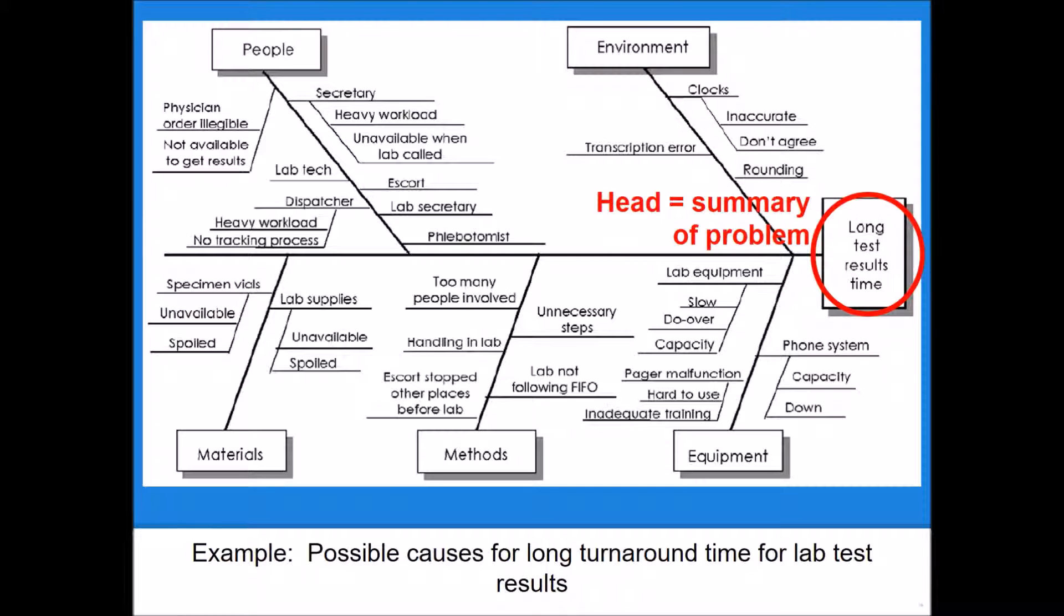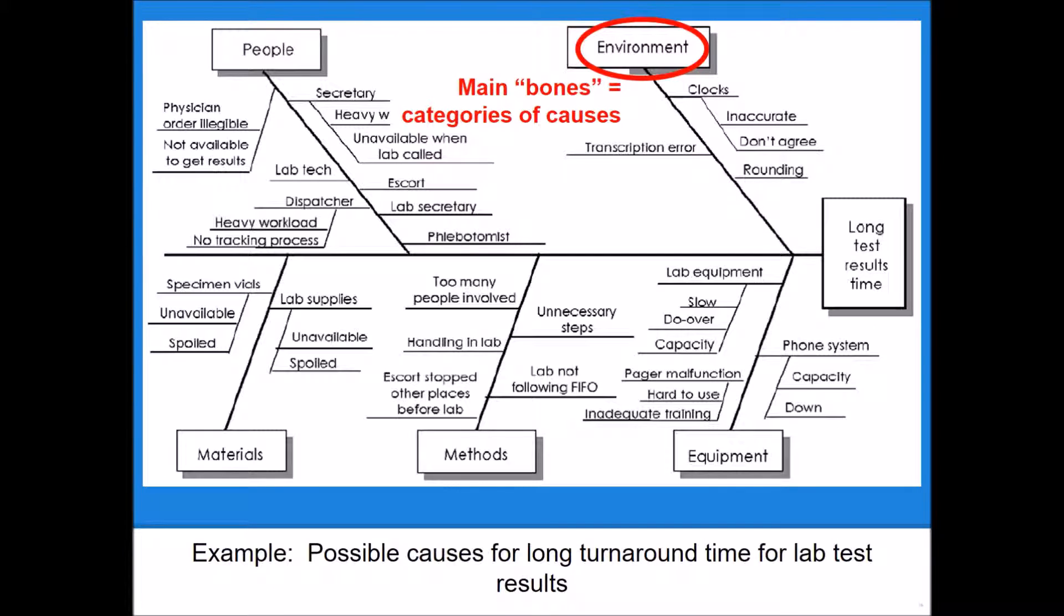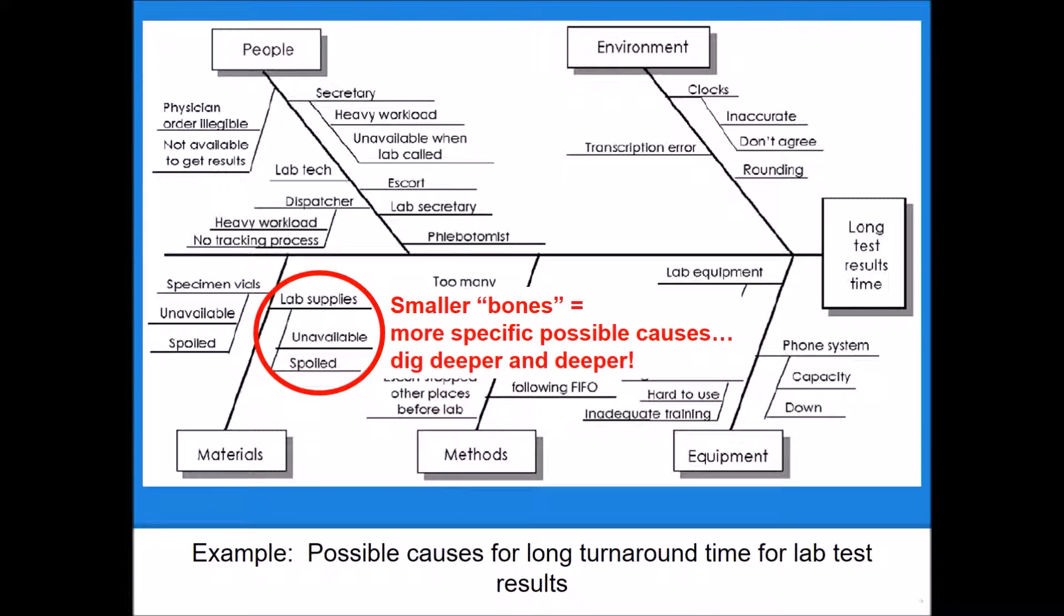The head of the fish is the summary of your problem. In this case, we're looking at a fishbone diagram for possible causes for long turnaround times for lab test results. The titles at the end of the main fish bones are the broad categories of potential causes for a problem. And then the smaller bones represent more specific causes. And as you get into smaller and smaller bones, you're digging down deeper and deeper down to the root causes of each of those potential problems.